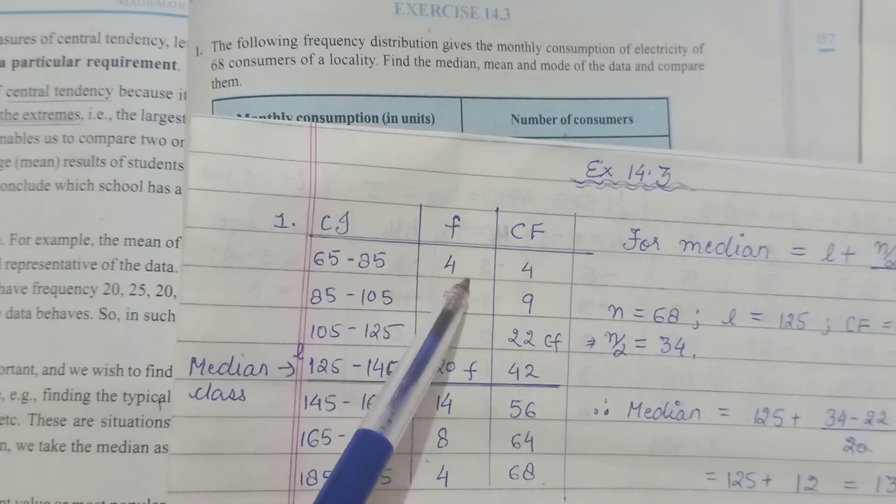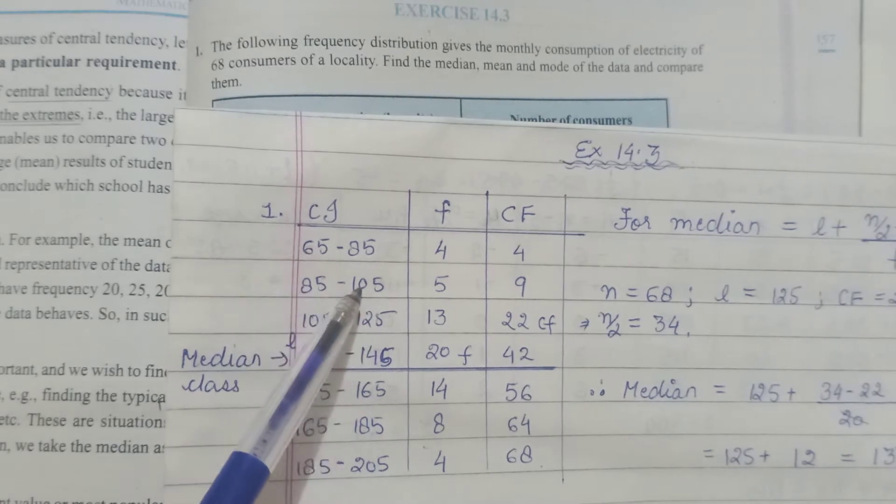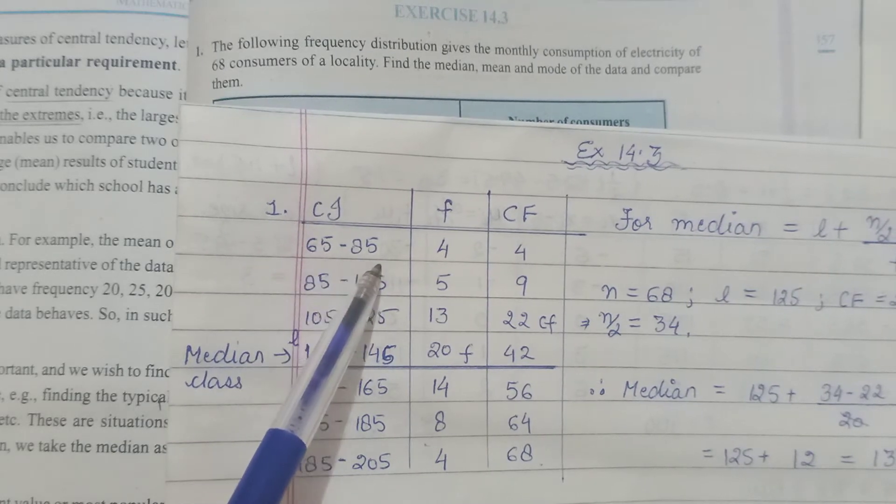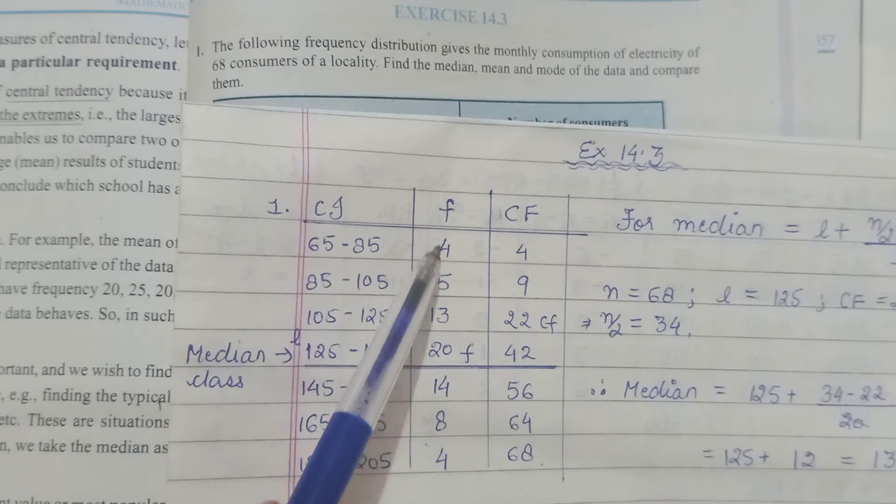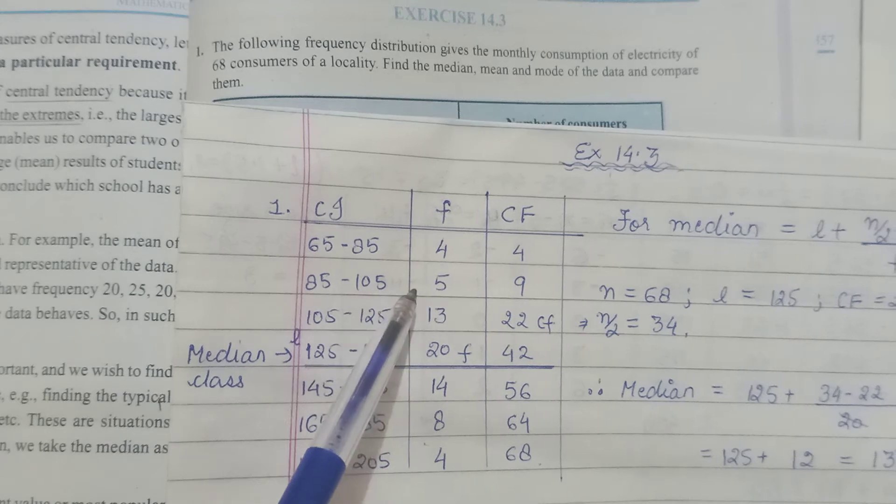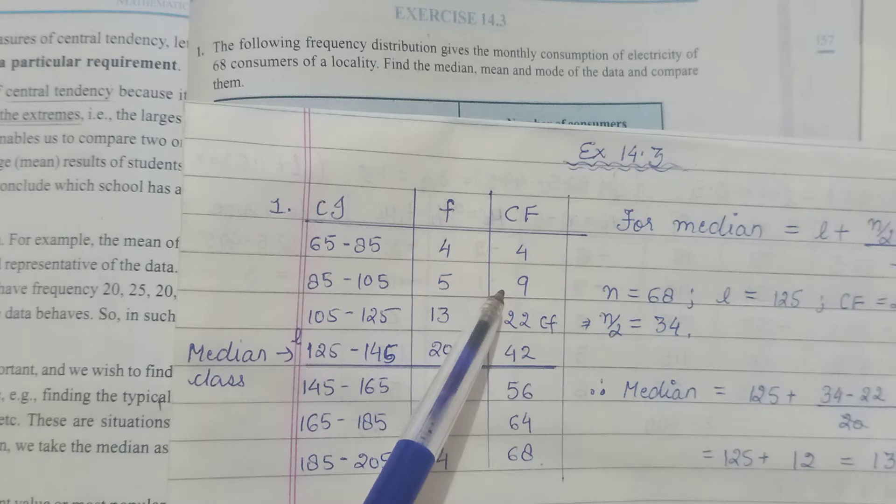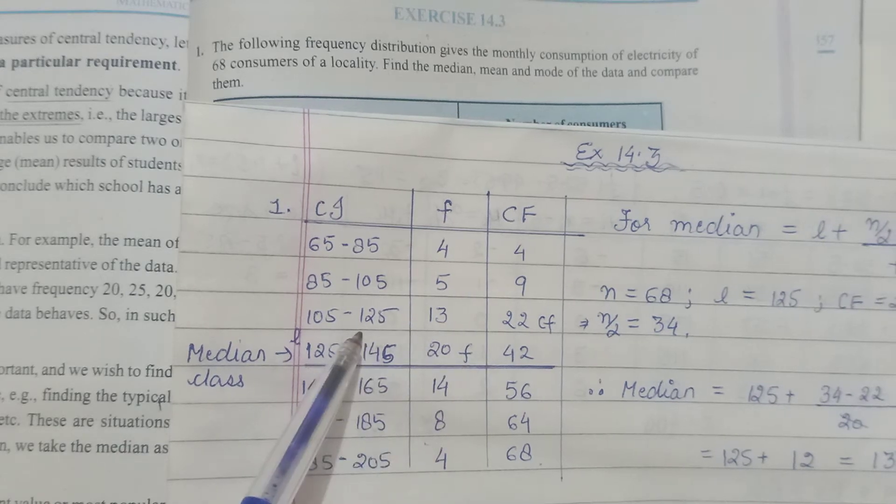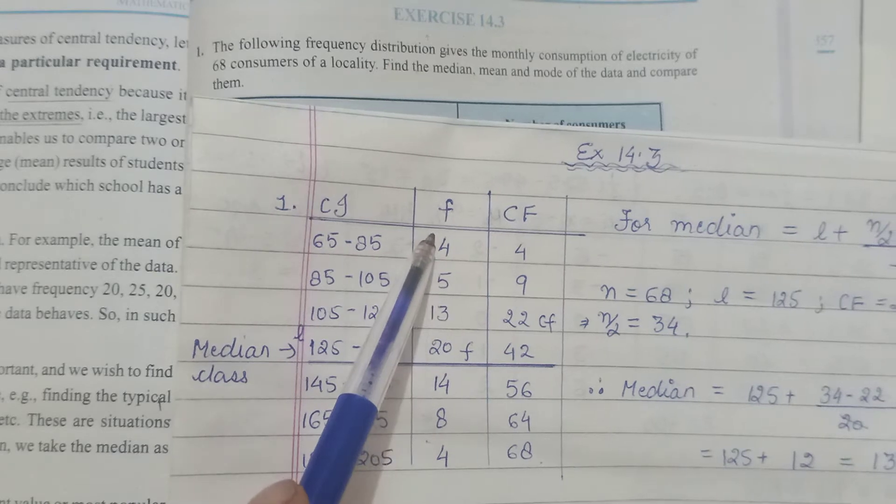These many entries are below 85. Then we write this one, 105, as below 105. When I say below 105, that automatically includes this class interval as well, so we add up these two frequencies. Below 105 may yeh bhi aa jayega aur yeh bhi aa jayega, so yeh add up ho jata hai 5 plus 4, which is 9.